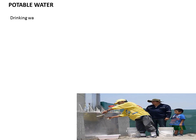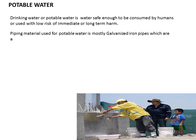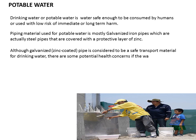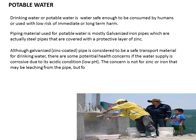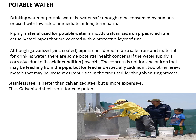Potable Water. Drinking water or potable water is water safe enough to be consumed by humans or used with low risk of immediate or long-term harm. Piping material used for potable water is mostly galvanized pipes — steel pipes coated with a protective layer of zinc. Although galvanized pipe is considered a safe transport material for drinking water, there are potential health concerns if the water supply is corrosive due to acidic (low pH) conditions — specifically the risk of lead and cadmium impurities leaching from the zinc used in galvanizing. Stainless steel is better than galvanized steel but more expensive. Galvanized steel is acceptable for cold potable water.